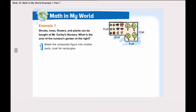Shrubs, trees, flowers and plants can be bought at Mr. Corley's nursery. What is the area of the nursery's garden at the right?